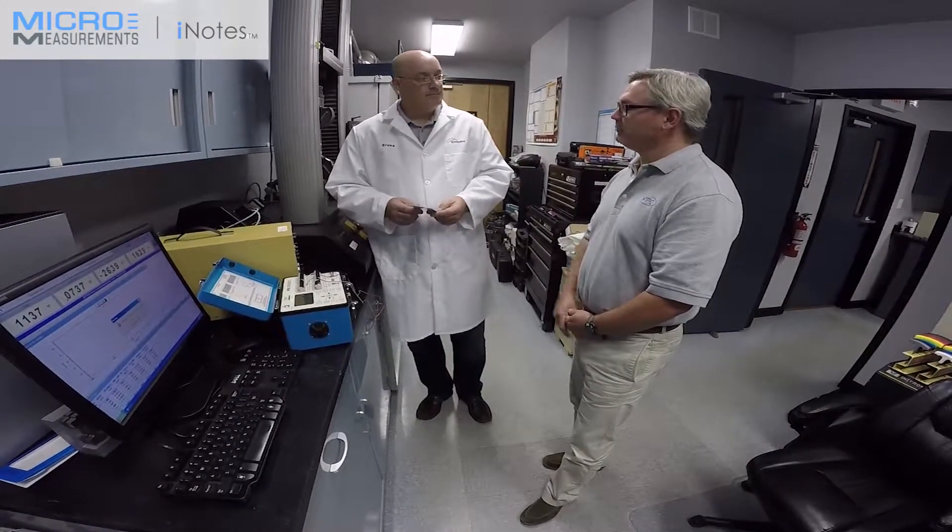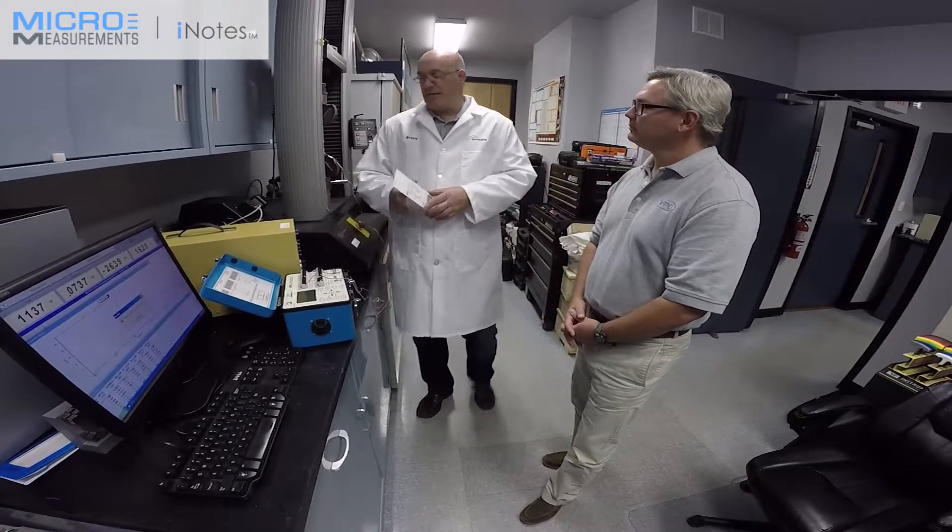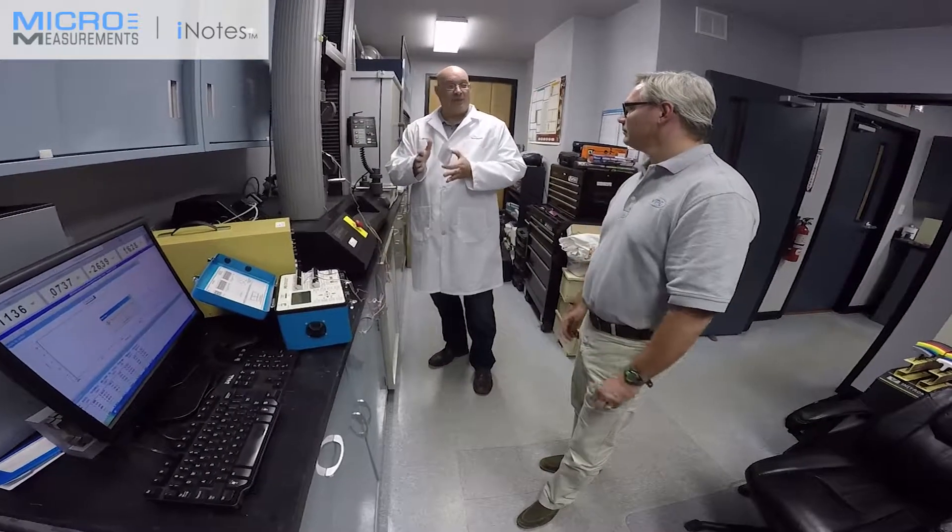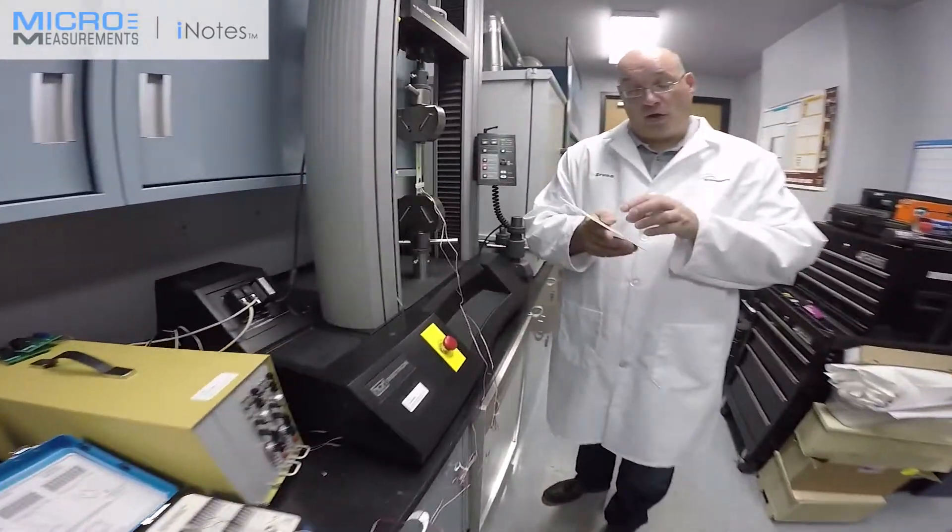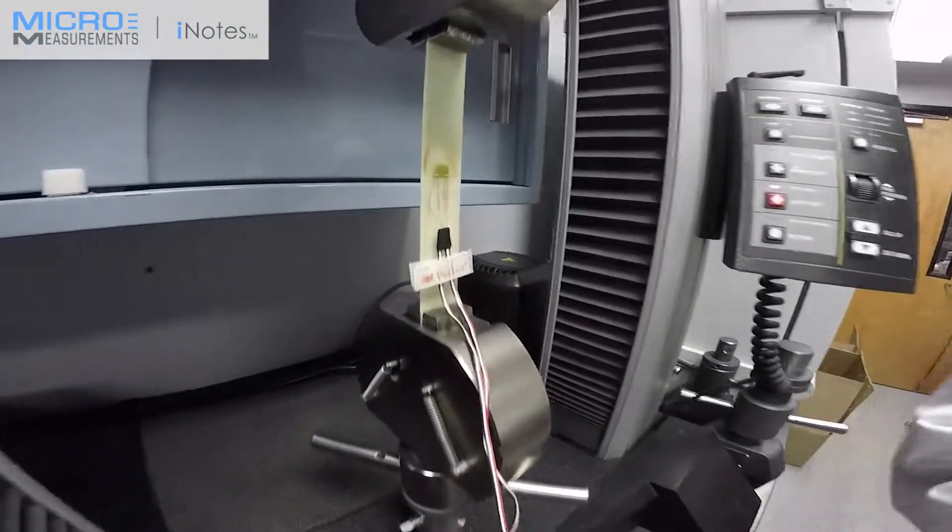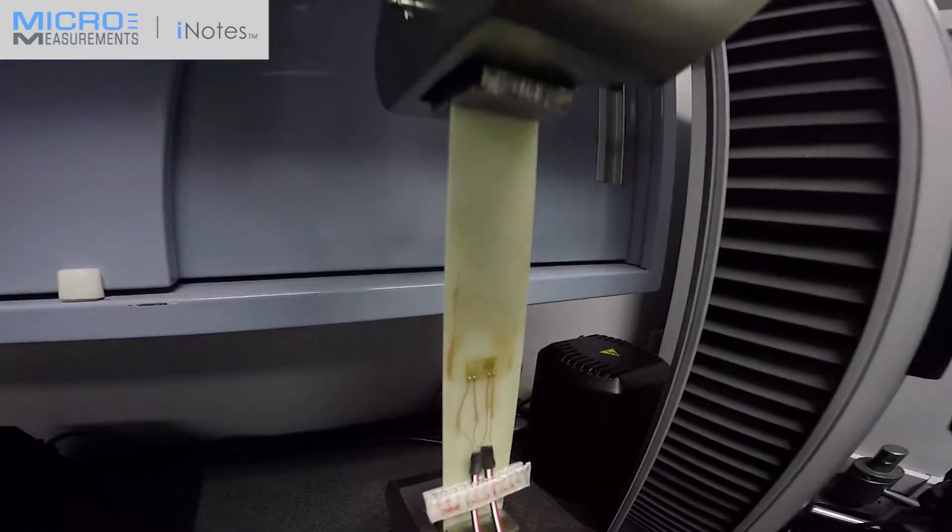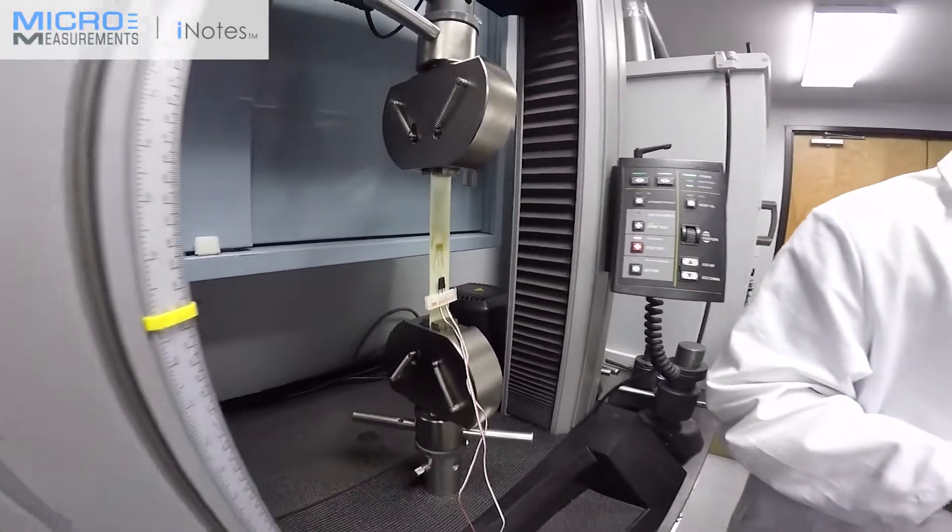So 125 would be an eighth of an inch active gauge length. Correct. Normally, for specimen, with this specimen here, we have a really tight knit fabric, which is perfect to use 125. If you have a bigger fabric or bigger type fiberglass setup, you would use a 250. So you have a better orientation and distribution on the width of the specimen so that you have, you know, accurate data.